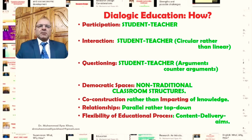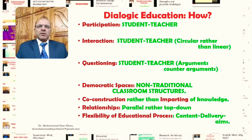Another important element needed for dialogic education is democratic spaces, which means we need non-traditional classroom structures. In traditional classrooms, the teacher is at the center of the educational process, but classrooms aimed at dialogic education need structures which encourage more equal participation, where the locus of control is not just the teacher — students are also equal participants.